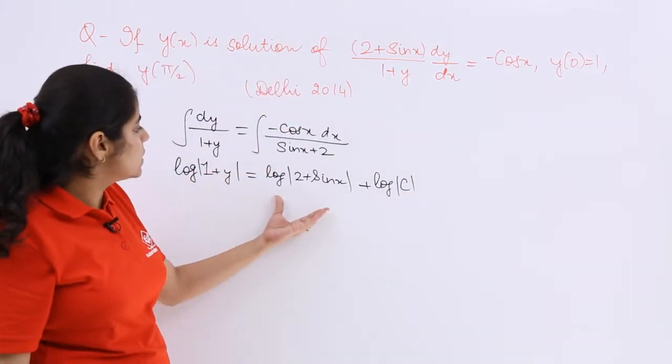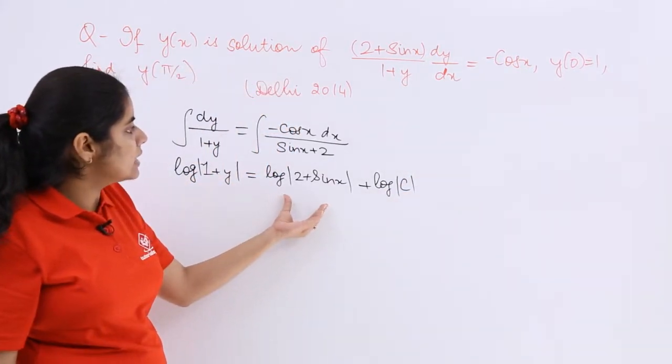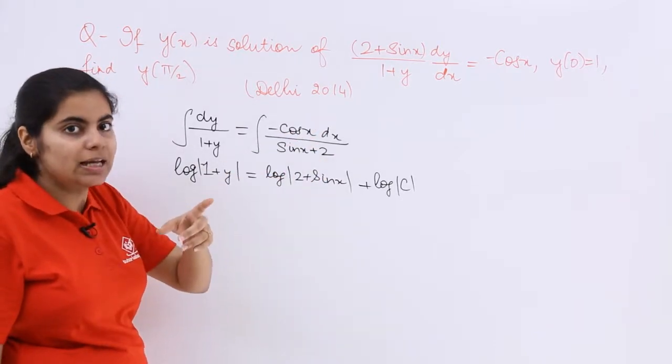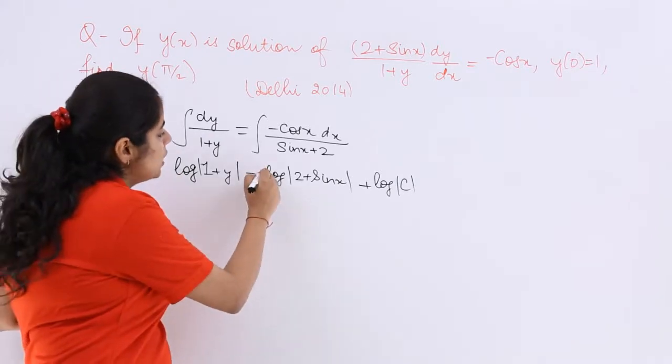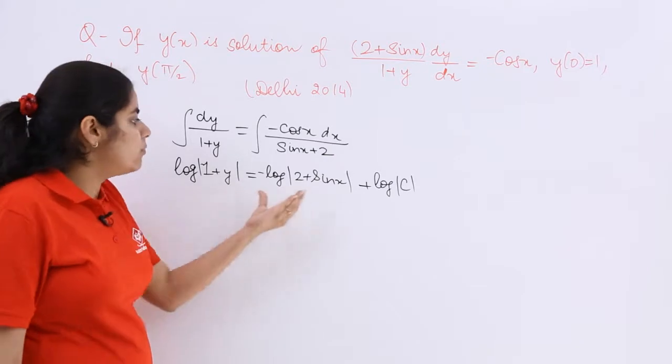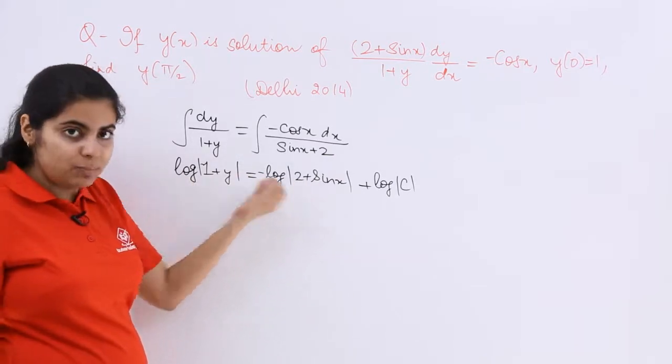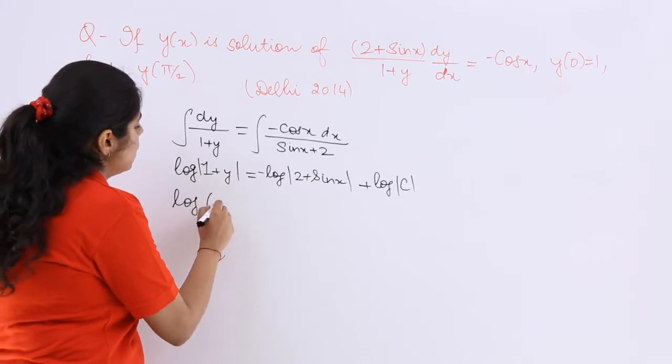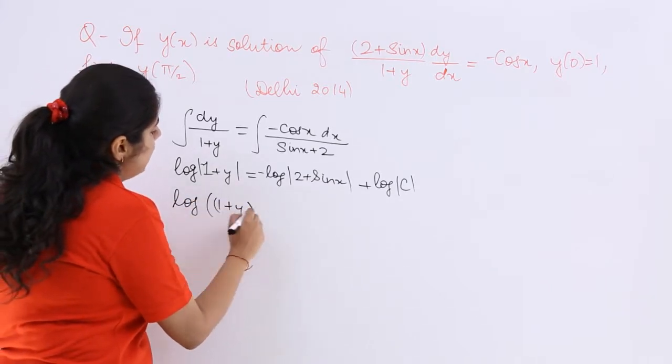Now you see, what is the answer like? One thing is very clear, 2 plus sin x will not give me minus cos x directly, but cos x. So I can introduce minus. Also, when log m goes with plus log n, it becomes log mn. So that will happen as log mn.